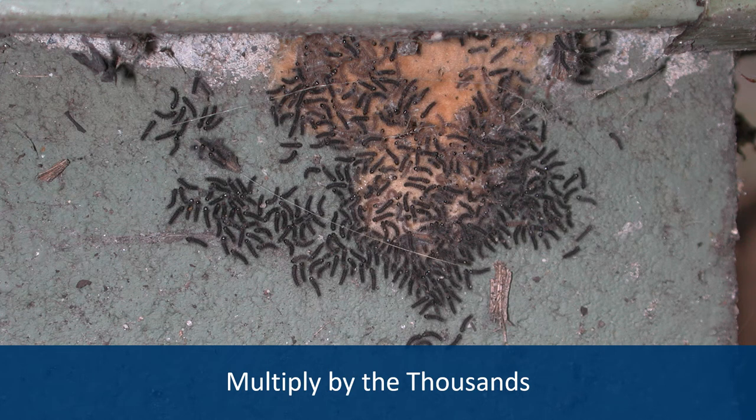Gypsy Moth can multiply by the thousands. In the image, the tan light brown color in the center is an egg mass. Each egg mass can have approximately 500 to 1,000 eggs. This egg mass has recently begun hatching out as thousands of caterpillars emerge to spread and feed.